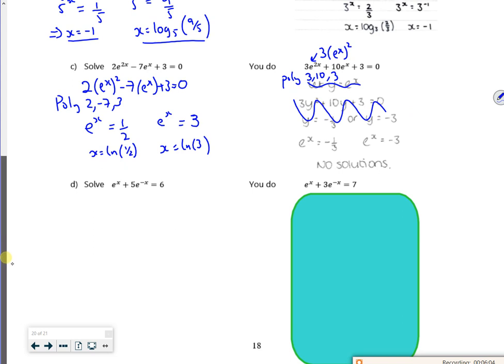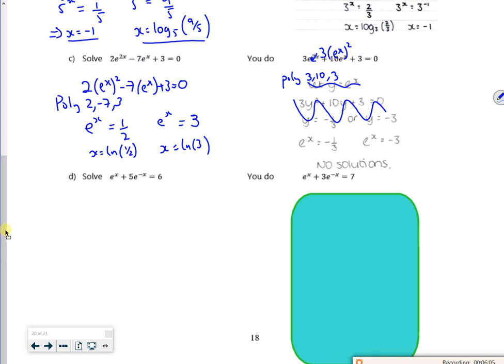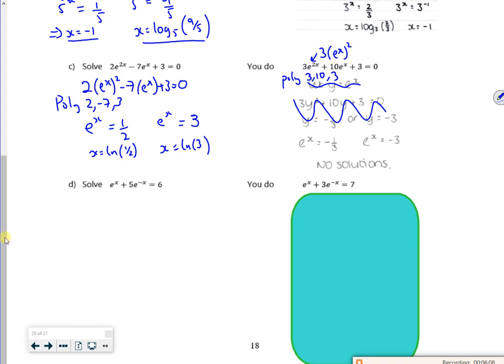So look at this one. So this one I'll do a little bit of rearranging with. So it's e to the x plus 5 over e to the x is 6. So if I multiply through by e to the x, I get e to the x squared plus 5 is equal to 6 e to the x. So I've got e to the x all squared minus 6 lots of e to the x plus 5 is equal to 0.